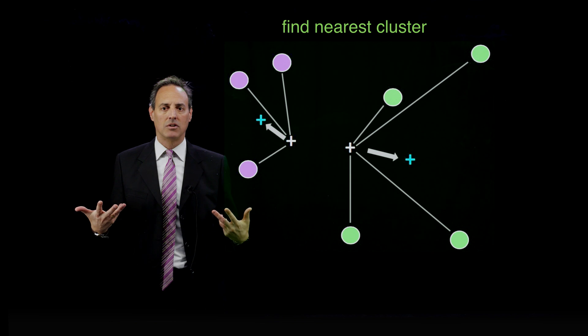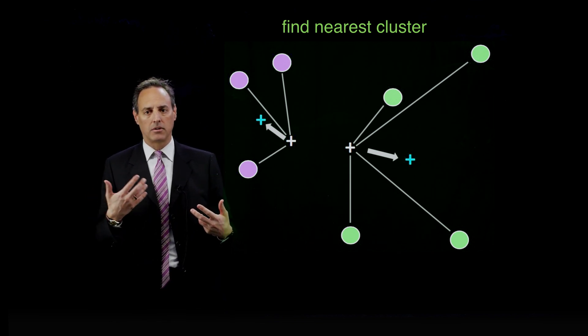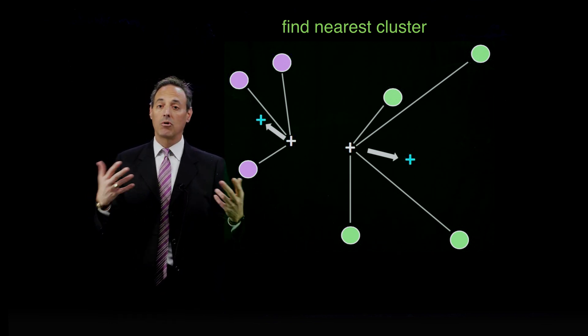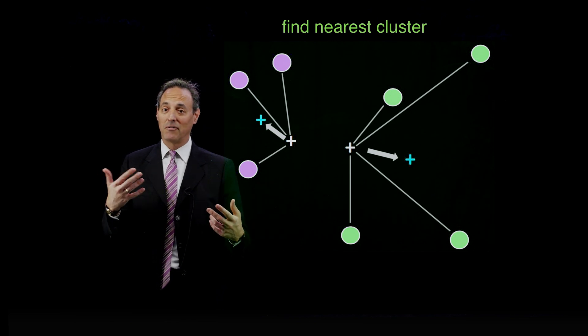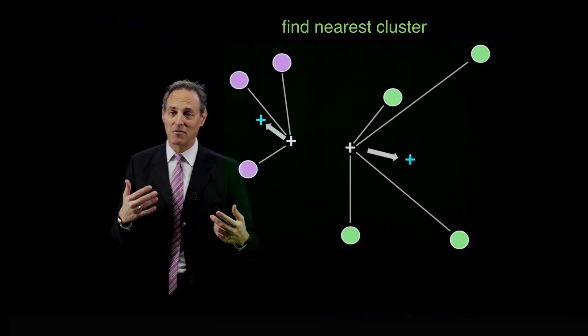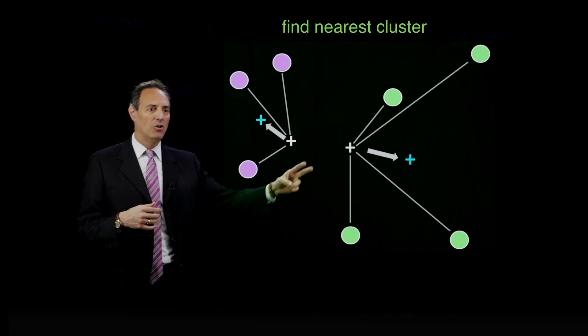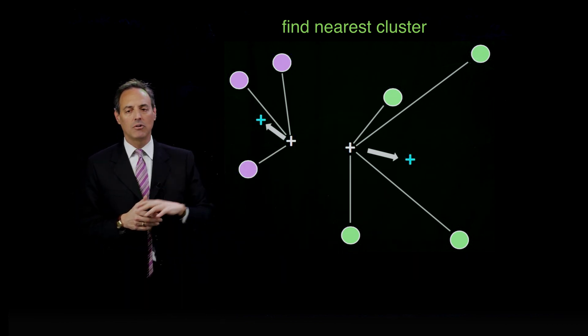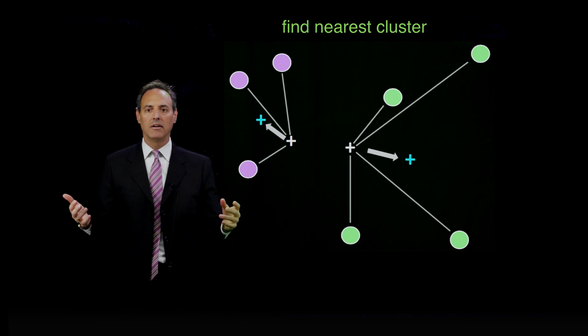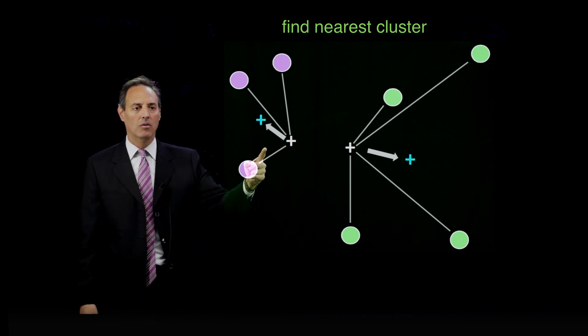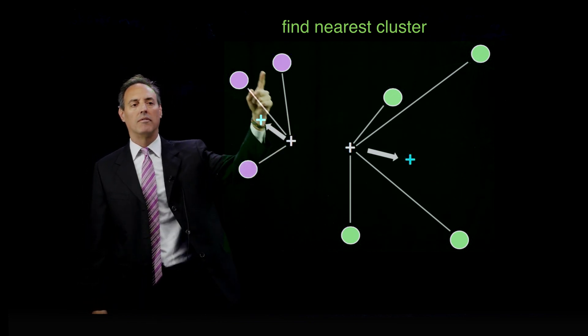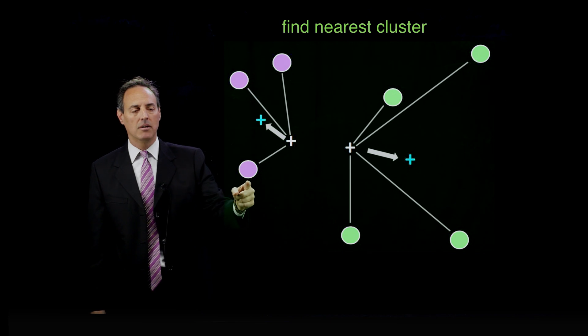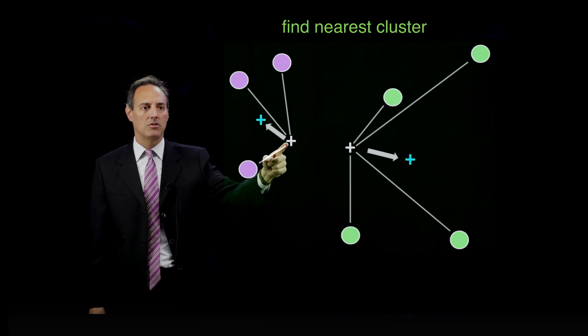So I just pick two points and I say those are the centroids of my two clusters. Of course, I've just guessed. So I have no idea if I'm correct or not. In fact, there are no labels, so it's very hard to tell if the truth has been achieved anyway.